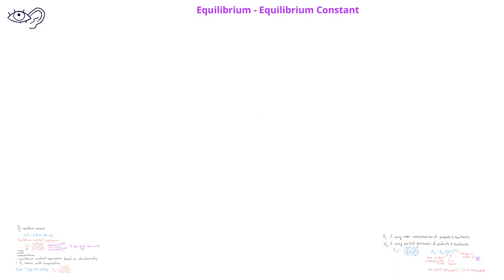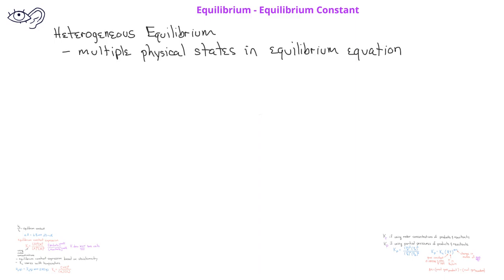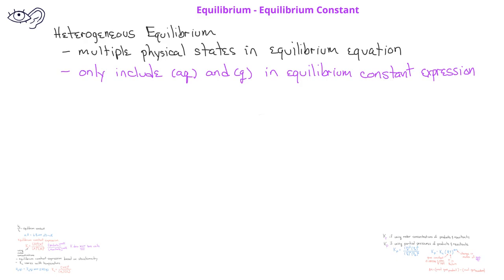We've already seen how equilibrium constants are calculated if we have a homogeneous reaction — in other words, if all the reactants and products are in the same physical state, for example, all in the gas phase. However, what happens if we have an equilibrium system that is heterogeneous? In other words, there are multiple physical states represented on the reactant and/or product side. In those situations, we only include in the equilibrium constant expression those reactants and products that are in either the aqueous phase or in the gas phase.